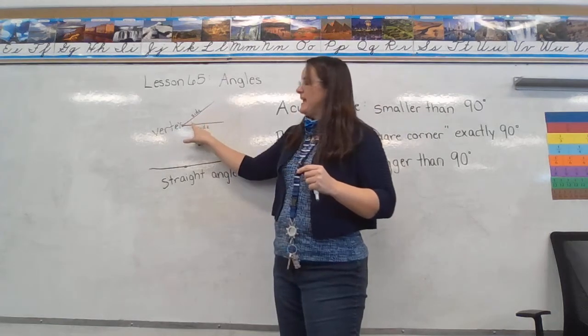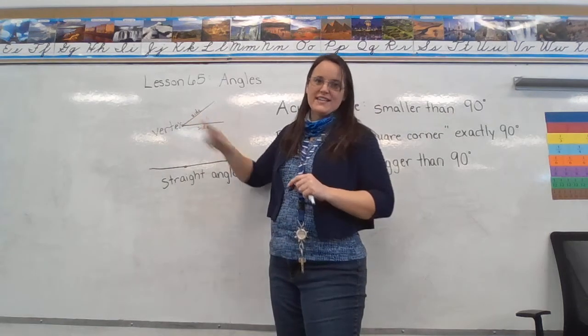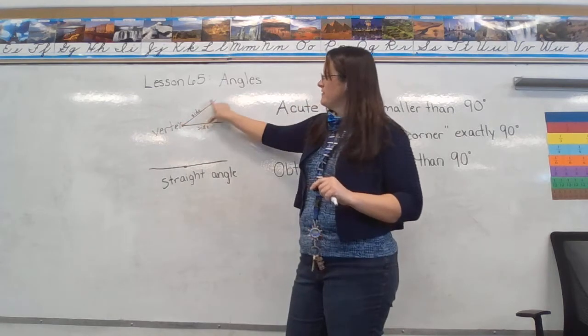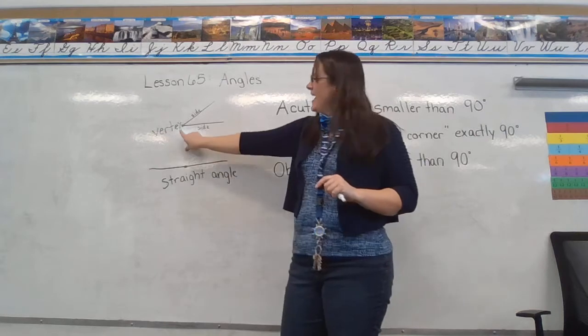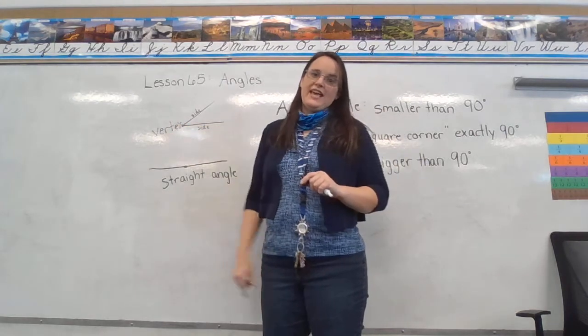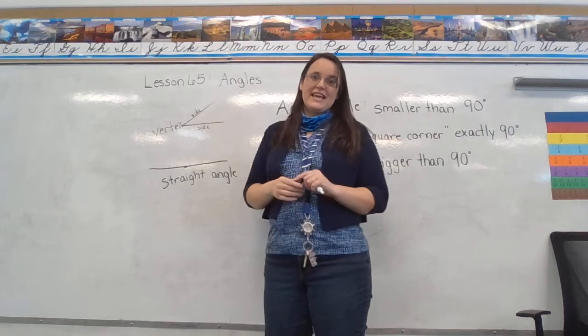This right here, this space in between the two sides, that is your angle. So we call both of these straight lines sides and then the point where they meet is called a vertex and this is an angle.